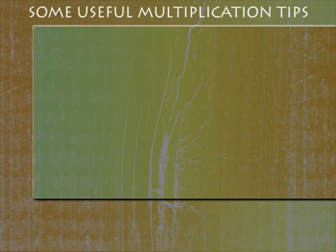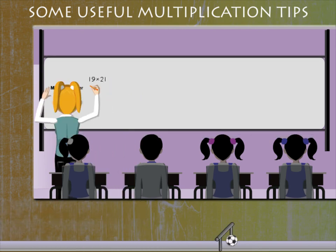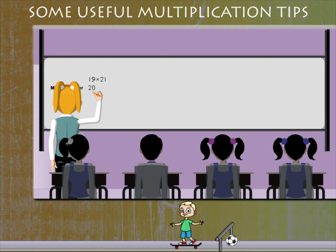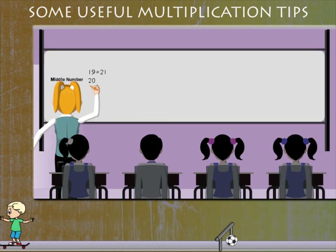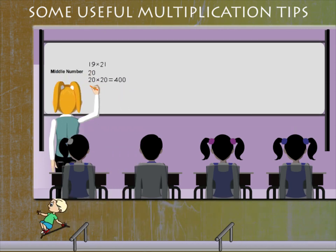Some useful multiplication tips. Teacher Nancy is in the class. She has a question: 19 into 21. She suggests that you take the middle number, 20, between 19 and 21. Multiply 20 by 20 and you get 400, subtract